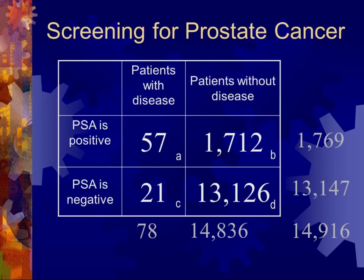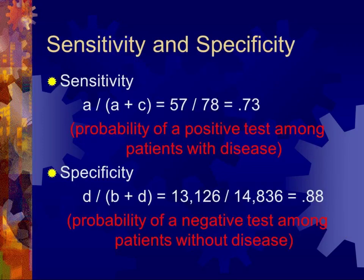In this large study of almost 15,000 total patients, 1,769 had a positive PSA and 13,147 did not. Of these, 78 ended up having prostate cancer and 14,836 ended up without disease. Sensitivity — A over A plus C — gives the PSA a sensitivity of 0.73, the probability of a positive test among patients with prostate cancer. Specificity — D over B plus D — came out to 0.88, the probability of a negative test among patients without disease.